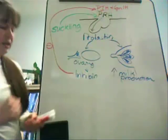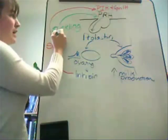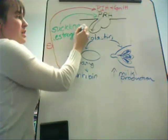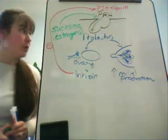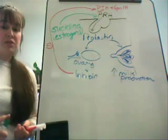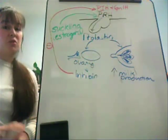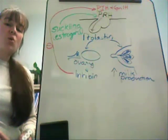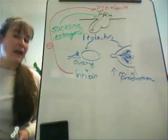Not only does suckling promote prolactin releasing hormone, but high doses of estrogens can also cause prolactin releasing hormone to be produced. Estrogens may be high in some females — there are certainly females that lactate even though they're not pregnant and have never had a child. Additionally, this is the correlation to males that lactate. Males can indeed experience lactation.